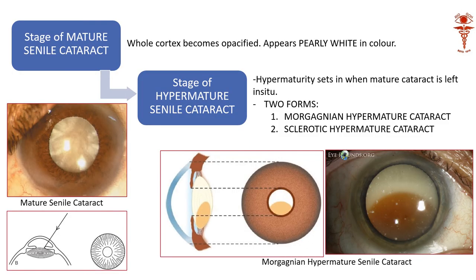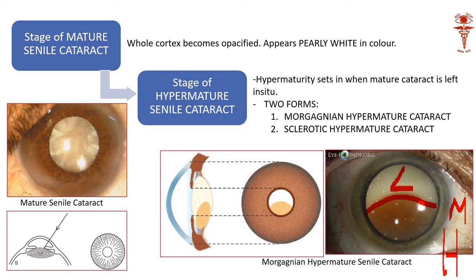The answer is no — we cannot avoid surgery. Because after a mature cortical cataract, we go to the hypermature stage. The hypermature stage is a morgagnian cataract, where the nucleus has sunk like a boat and the whole cortical matter is liquid. You can just poke it and it will all ooze out, and the nucleus floats like a boat. This morgagnian cataract is very dangerous because it can leak — if the liquid cortex leaks, a phacolytic reaction is started, leading to phacolytic glaucoma.